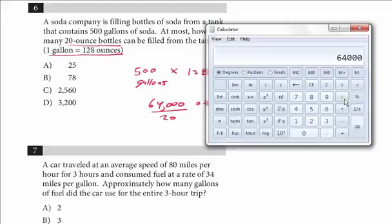And we want to know how many 20-ounce bottles we can fit. Now we have the same term here, ounces to ounces. So we can just take this and divide it by 20. 64,000 divided by 20, and that's 3,200. And that's the answer.